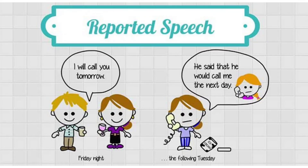For example: 'I will call you tomorrow' — Friday night. He said that he would call me the next day — the following Tuesday. This is known as reported speech, but reported speech has another name, and we will learn that name in this video.